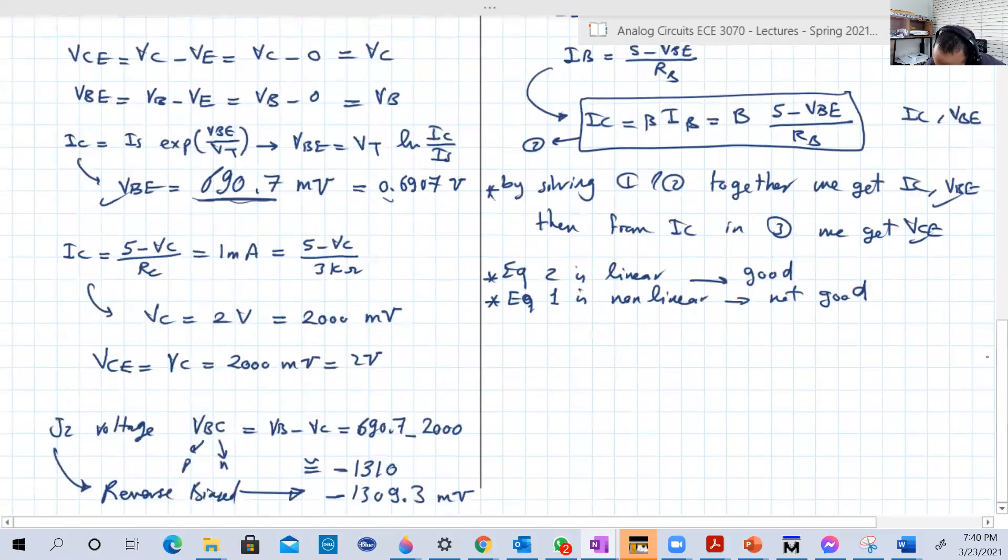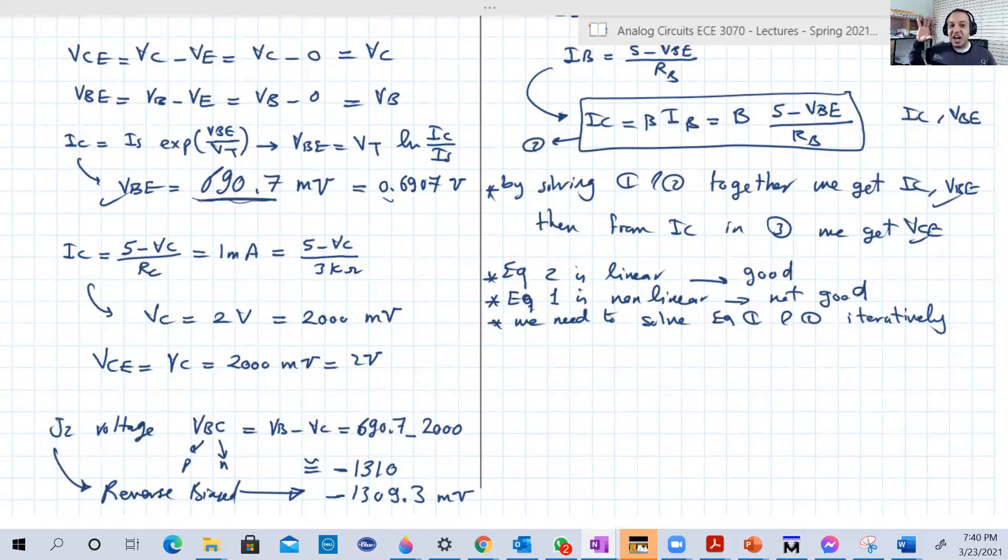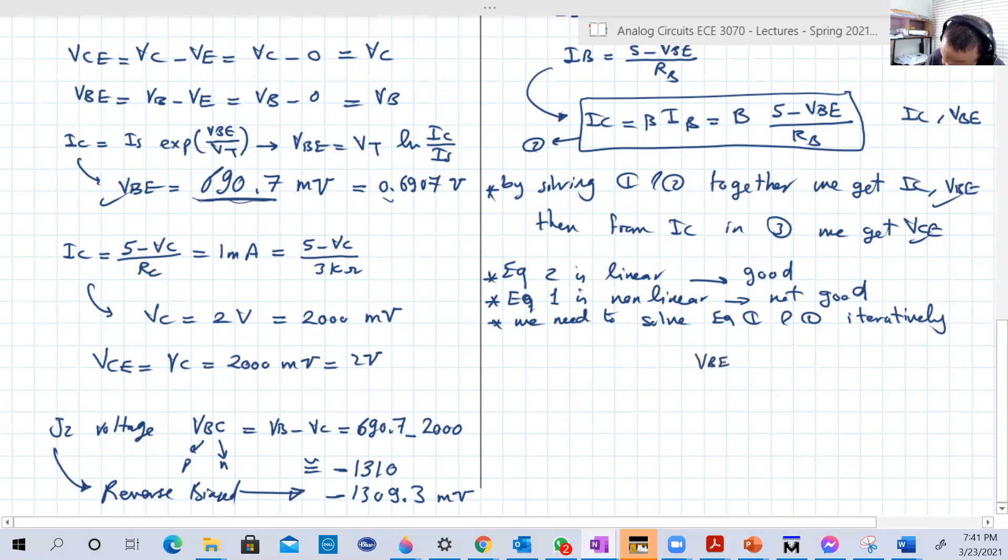Just like what we did with the diode, iterative solution. So we need to solve equation 1 and 2 iteratively, just like what we did with the diode. VBE is like VD, the diode voltage. IC is like ID, the diode current. So exactly the same way. We're going to assume some value, initial value for VBE, which is VD, and we used to do that like 0.7, right? Then we calculate IC, then go back in a loop, iterations after iteration until we stop at some point after reaching some very small error.